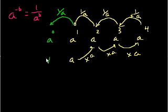So that's where the definition, or that's one of the intuitions behind why something to the 0th power is equal to 1. Because when you take that number and you divide it by itself one more time, you just get 1. So that's pretty reasonable.